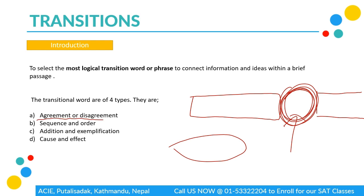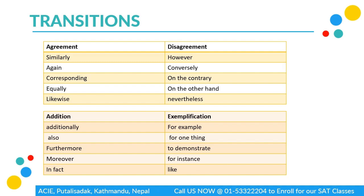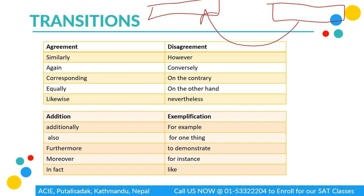When two sentences are given and the second sentence is agreeing with or supporting the first sentence, we use agreement transitional words. For example: similarly, again, correspondingly, equally, and likewise.